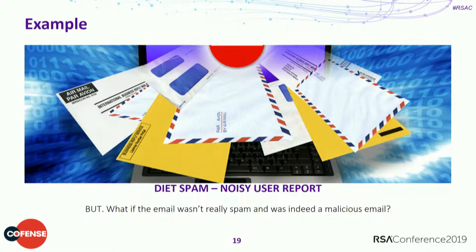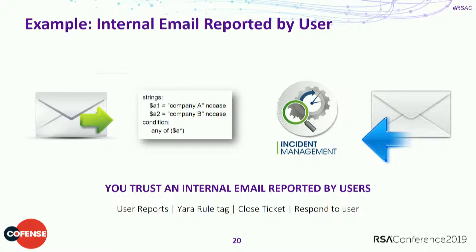The risk was that when users would get a response saying 'it's okay to interact with it,' they were potentially interacting with a real phishing email. But if you have more variables you can add to your rules to make them more robust, you reduce your chances of a false alarm — and that can also enhance your automation process.